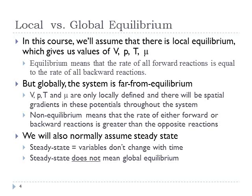Now we're going to go through definitions of local versus global equilibrium, and equilibrium versus non-equilibrium. Throughout this course, we'll be assuming that in any given small region of space there is such a thing as local equilibrium. In a small volume — still containing maybe 10^21 or 10^22 particles — we assume local equilibrium exists. This gives us voltage, pressure, temperature, and chemical potential at that location, say inside the electrolyte of a fuel cell.